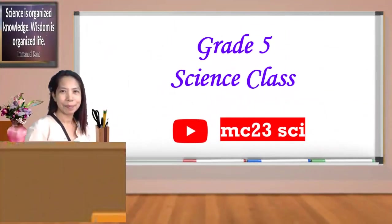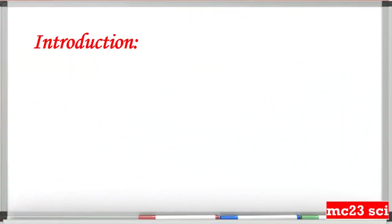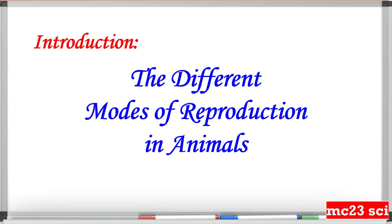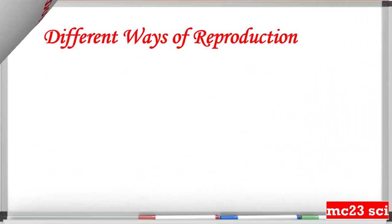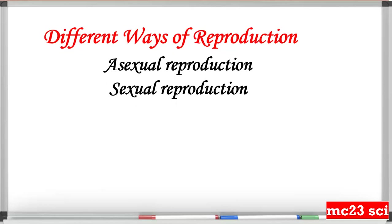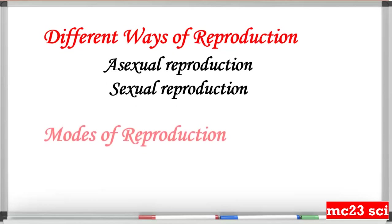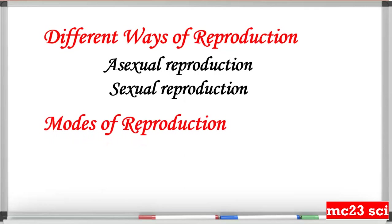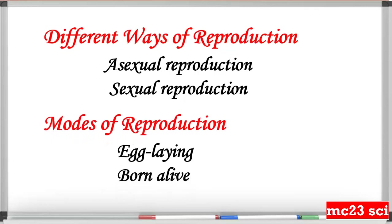Welcome to Grade 5 Science class. Today we're going to discuss the introduction of the different modes of reproduction in animals. There are different ways of reproduction: sexual reproduction and asexual reproduction. The modes of reproduction are egg-laying and born alive.